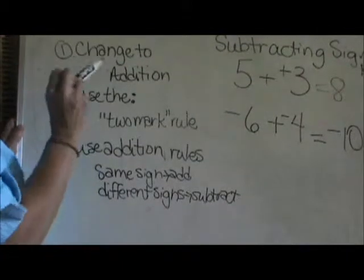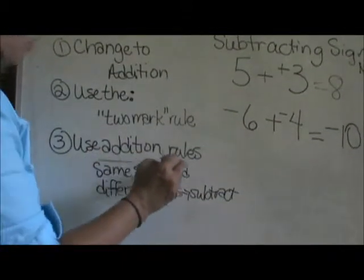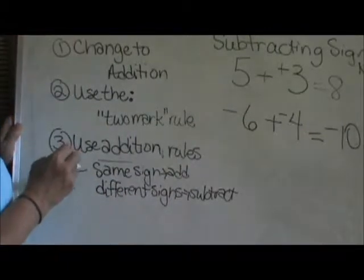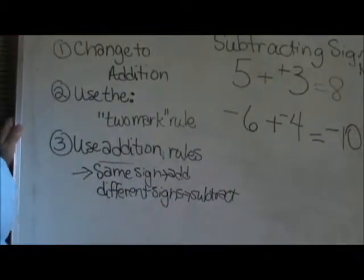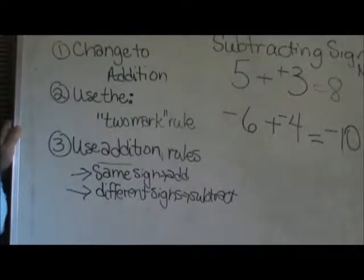After you use the 2 mark rule, you have changed the problem to addition. Then you use the addition rules. If you have the same sign, you add. If you have different signs, you subtract and take the sign of the larger number.